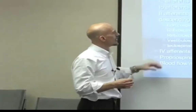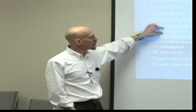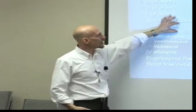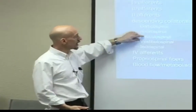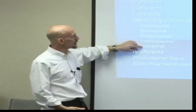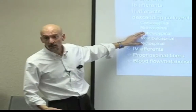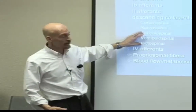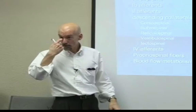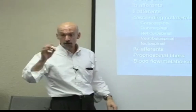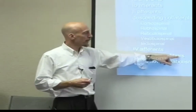The corticospinal tract and rubrospinal tract run the flexors. The reticulospinal, vestibulospinal, and tectospinal tracts run the extensors. Type 4 afferents are pain fibers, and they go to two different areas of the brain.